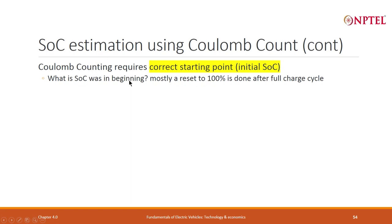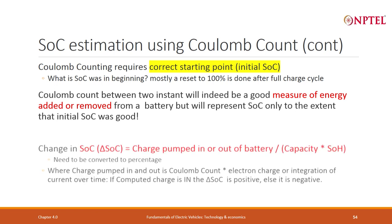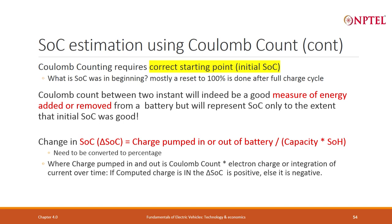Correct starting point is very important. Normally, if the battery is fully charged, you know it is close to 100 percent — that is the time you can count down correctly as it discharges. Coulomb count between two instants gives a good measure of energy added or removed from the battery, but will represent SOC only to the extent that initial SOC was good. Delta SOC — change in SOC — is the charge pumped in and out of the battery divided by the current capacity of the battery.